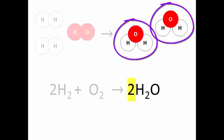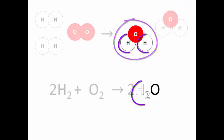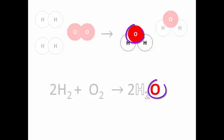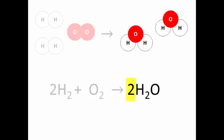Here we have two molecules, and each molecule has two H atoms bonded to one O atom. That's why we write H2 — two H atoms. O, we could write O1, H2O1. We simply write H2O, leaving off the one. There are two H2Os, so it's 2H2O.